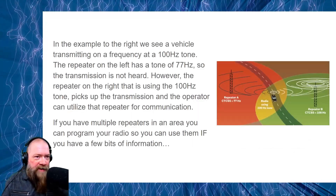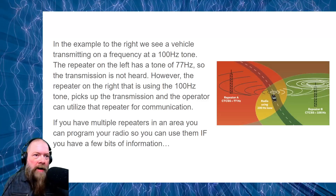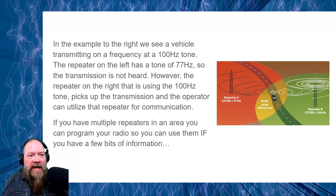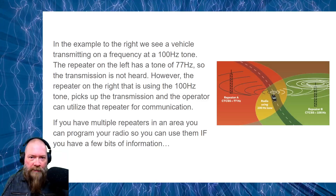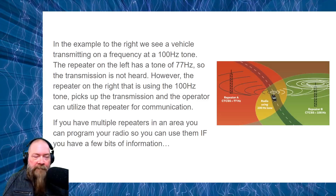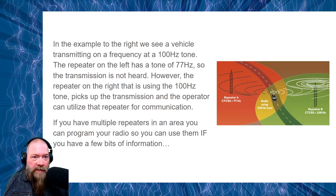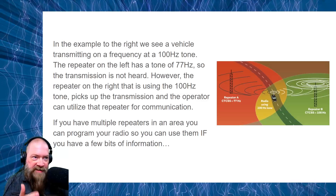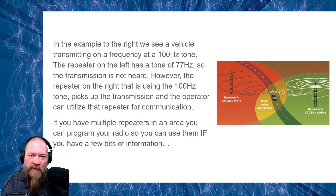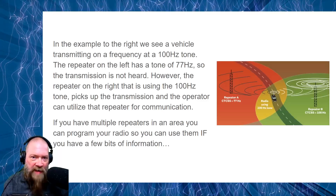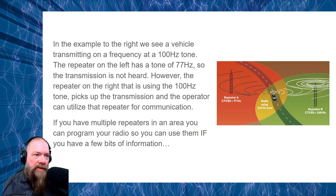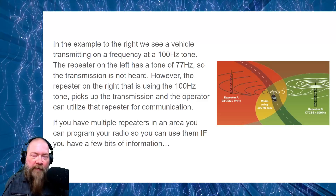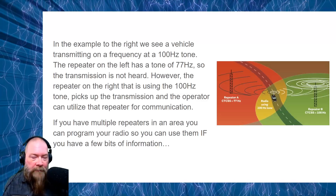In the example on the right, we see a car going down the road — let's assume he's got a mobile rig or HT set to a certain frequency at a 100 Hz tone. Repeater A on the left has a CTCSS tone of 77 Hz, whereas Repeater B on the right has a CTCSS tone of 100 Hz. When he hits PTT, the signal goes right through Repeater A — it ignores everything, because he doesn't have the proper tone. However, Repeater B is set at the same tone and frequency, so he's now able to communicate with anyone on that repeater. Does that make a little more sense?